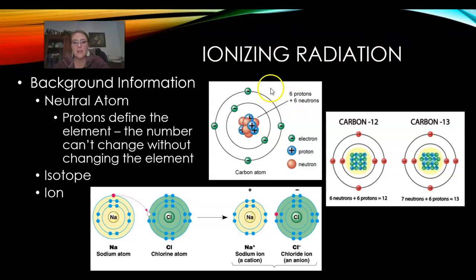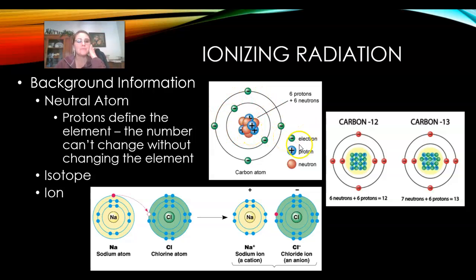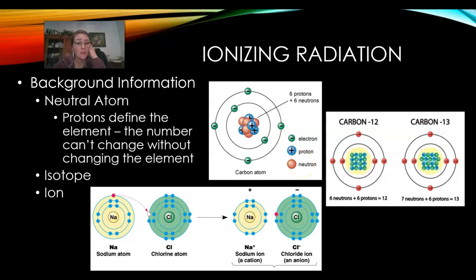So in order to talk about ionizing radiation, we need to take a step back and look at some background information. A neutral atom is going to be an atom with the same number of protons, neutrons, and electrons. Remember, atoms don't really look like our diagrams — they're a lot more complicated — but this is how we draw them so that we can understand with our brains. The protons and the neutrons are in the middle, and the electrons are in a cloud on the outside. Neutrons are not charged, so they basically don't change the charge of the atom. But protons have a positive charge and electrons have a negative charge. So if you have plus six minus six, that equals zero — that's neutral. That's what a neutral atom is.